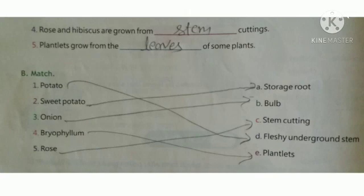Question number 4, rose and hibiscus are grown from stem cutting. Number 5, plantlets grow from leaves of some plants.